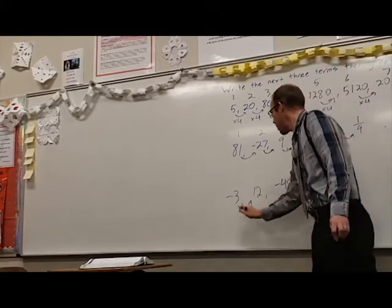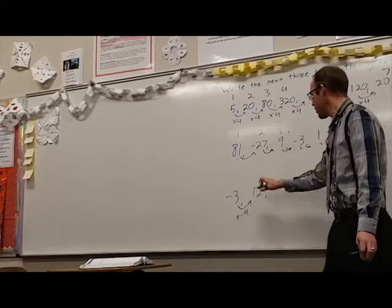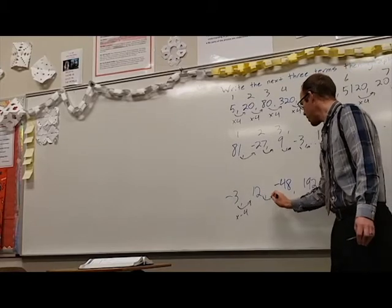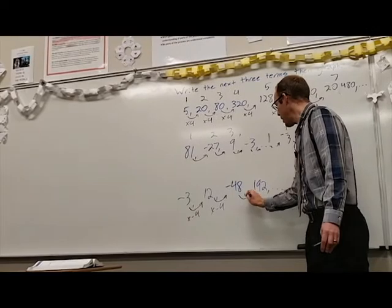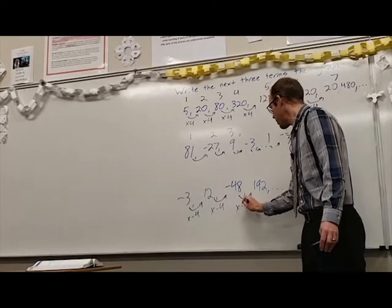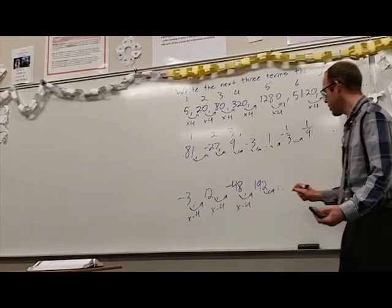Negative 3 times negative 4 will get us a positive 12. Positive 12 times negative 4 will get us negative 48 and if we continue to multiply by negative 4 we will continue our sequence.